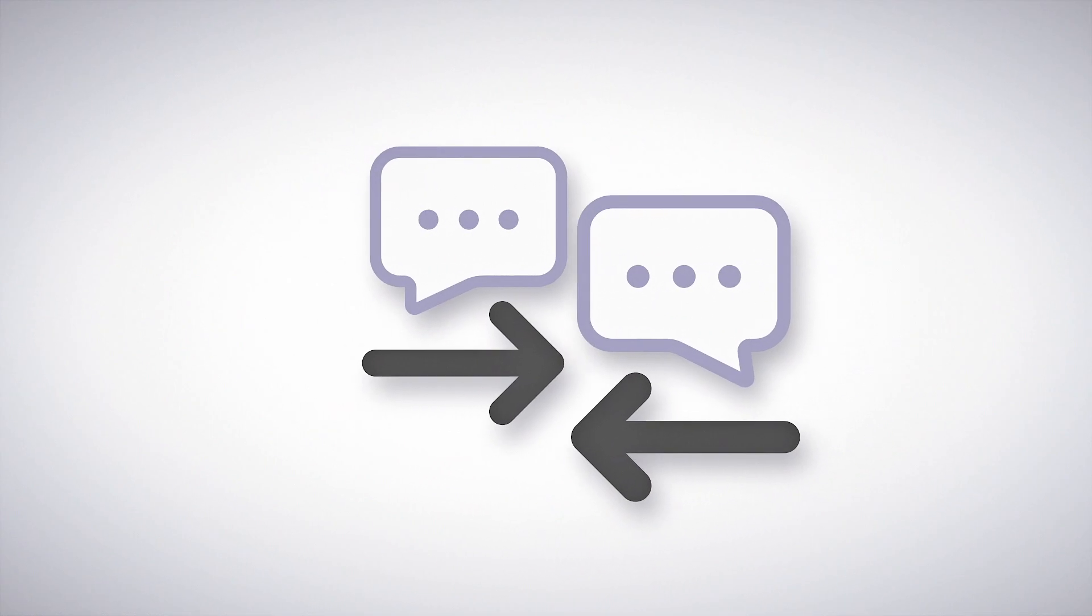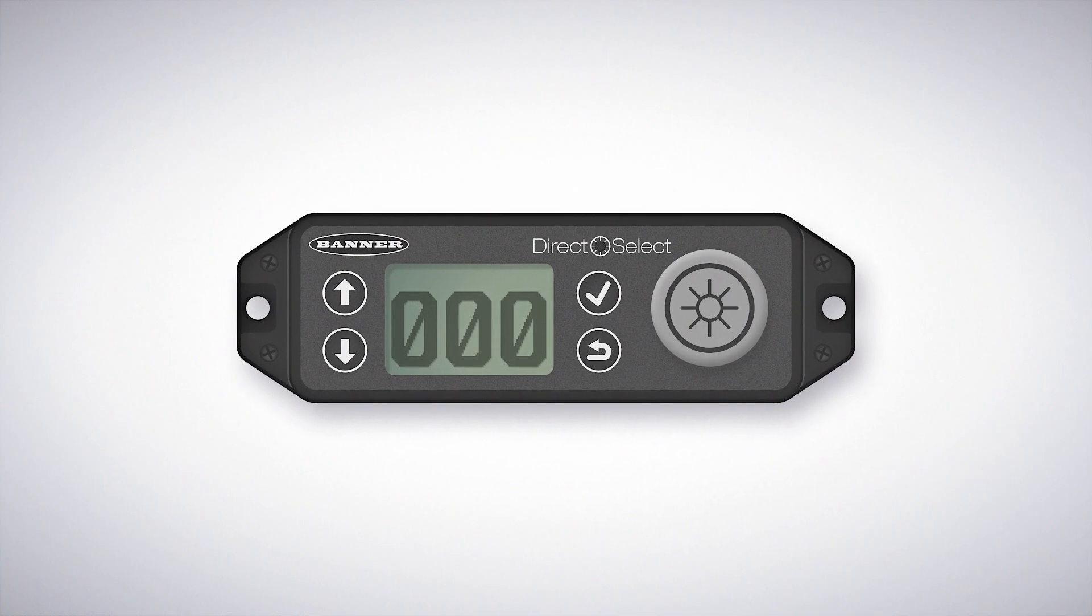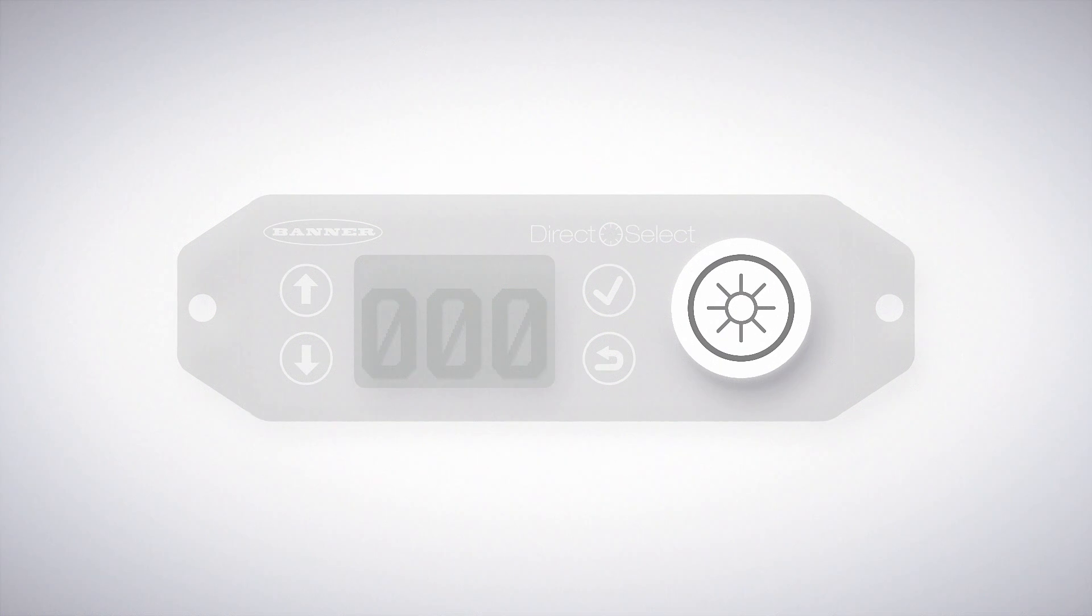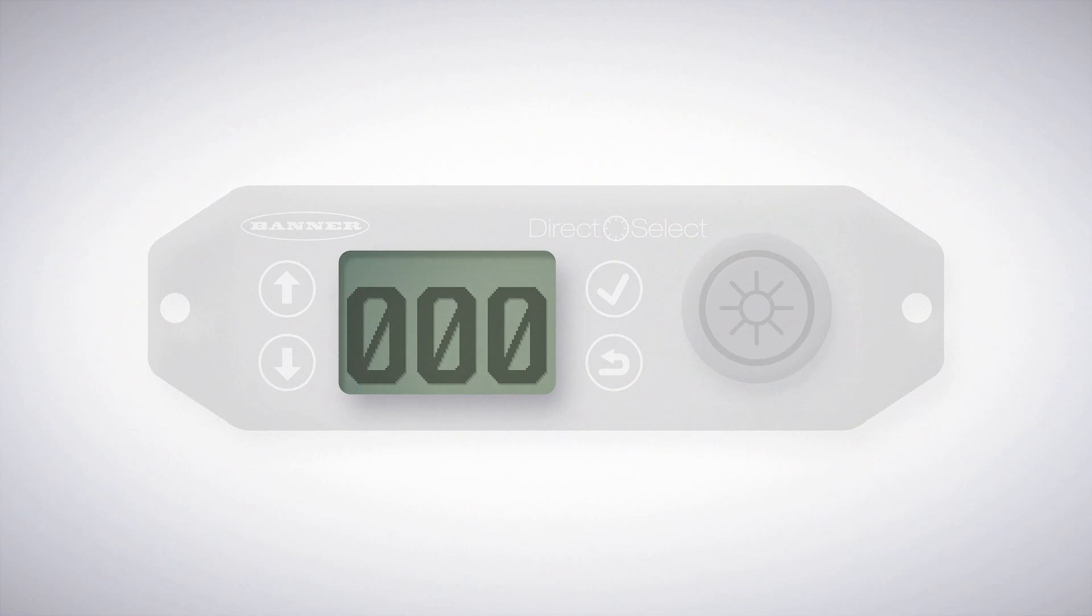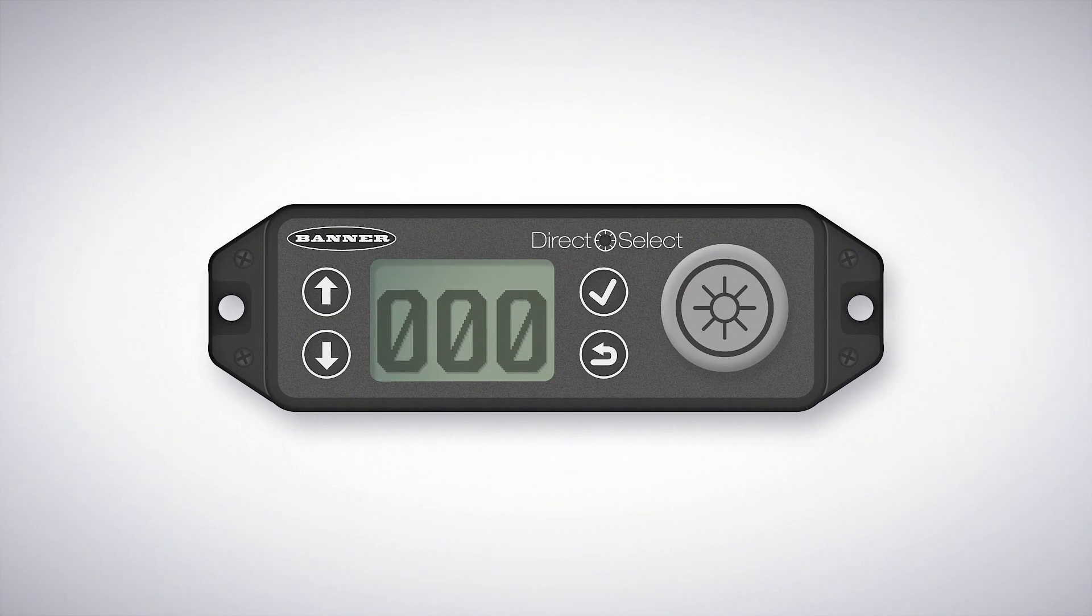Get two-way communication where you need it with the DirectSelect Wireless Node, your mobile visual indicator from Banner Engineering. The DirectSelect combines a highly visible status indication button, three-digit LCD display, and replaceable battery all in a single mobile wireless device.